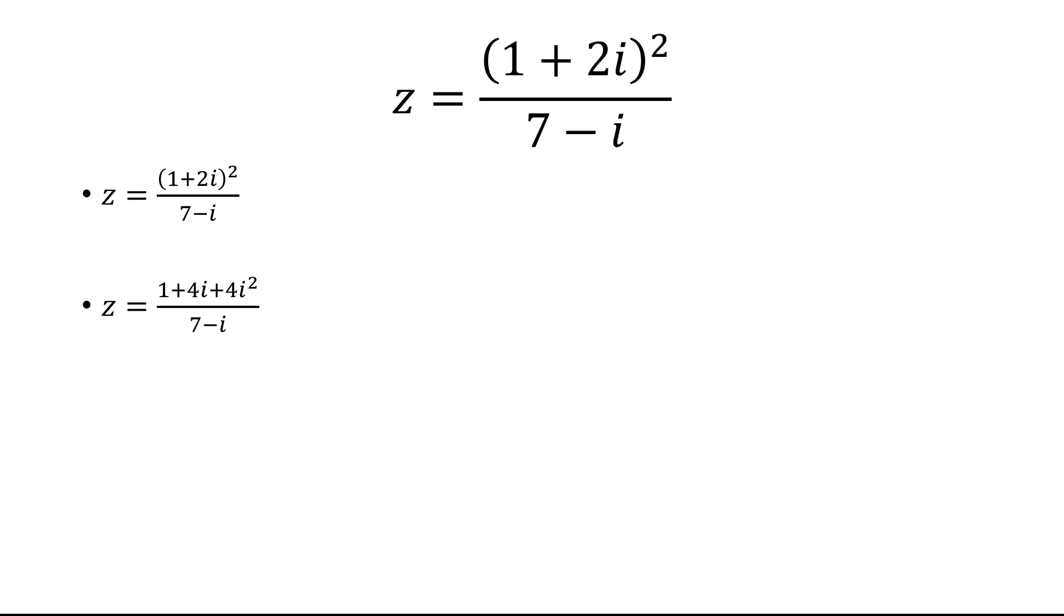i squared is negative 1, so 4 times negative 1 is negative 4. Add it to 1 and we get negative 3.